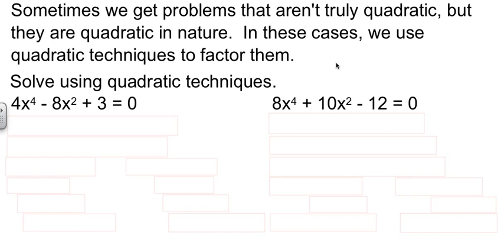One last kind of problem they're going to throw at us, is they're going to give us some that aren't truly quadratic, but they act like quadratics. And since they act like quadratics, we can use quadratic ideas to work with them. For example here, we have 4x⁴ - 8x² + 3. Look at your terms. This middle term is half the power of the lead term. That makes it a quadratic type of problem. It's not a true quadratic, but it's that nature. So we're going to factor it the same way we did when we did quadratics.